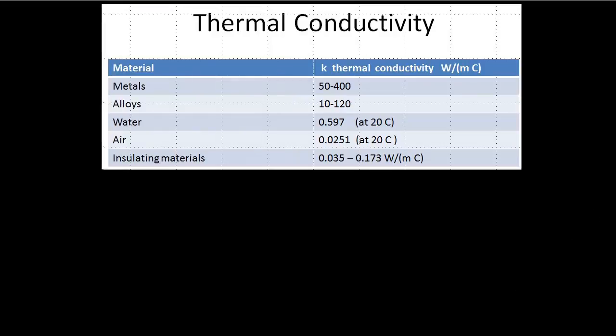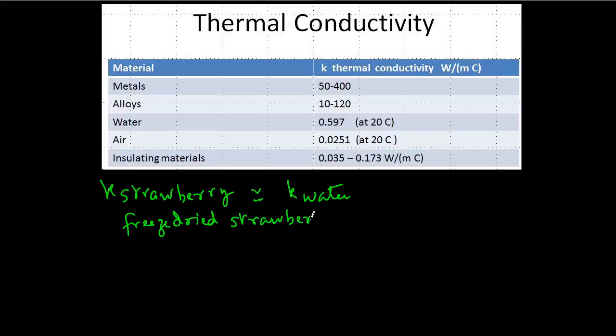Now, if you wanted to quickly estimate thermal conductivity of a high-moisture food, such as strawberries, we will expect that its thermal conductivity will be close to that of water. Whereas, if we were to estimate thermal conductivity of freeze-dried strawberries, then the value will be closer to that of air. Keep this in mind when you look at a value of thermal conductivity and you want to make a judgment whether that value sounds reasonable or not.